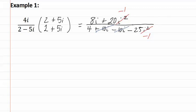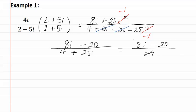As should always happen with conjugates. This gives us eight i minus twenty over four plus twenty-five, which gives us a final answer of eight i minus twenty over twenty-nine.